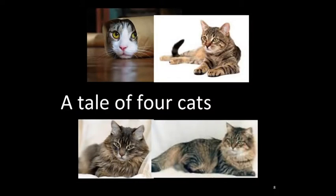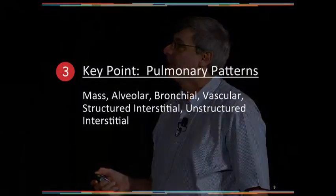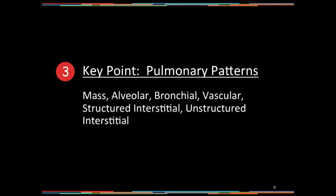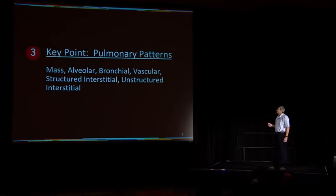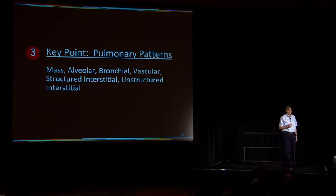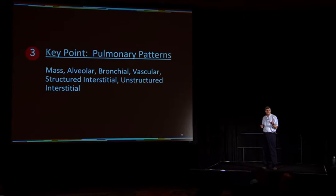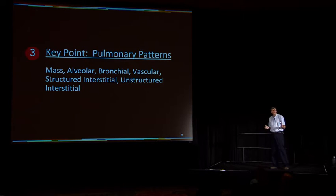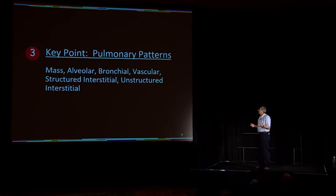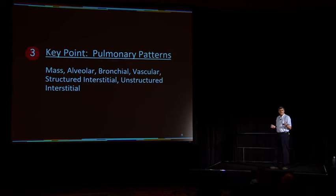We're going to have a tale of four dogs. From a pulmonary pattern standpoint, I'll be describing things as either a mass, an alveolar pattern, a bronchial, a vascular, a structured interstitial, or an unstructured interstitial. A lot of people don't include vascular as a pulmonary pattern because it's not happening within the interstitium and alveolar space, but vessels contribute greatly to the overall opacity. If you think of a hypovolemic dog and how dark the lung fields are, that's purely a vascular event — vessels are small and capillary beds are small.